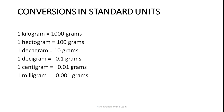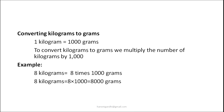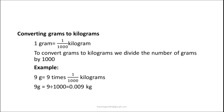We are going to use this for our conversions. If we need to convert kilograms to grams, 1 kilogram equals 1000 grams, so 8 kilograms equals 8 multiplied by 1000, which is 8000 grams. To convert grams to kilograms, divide by 1000 because 1 gram equals 1 thousandth of a kilogram. So 9 grams equals 9 divided by 1000, which is 0.009 kilograms.